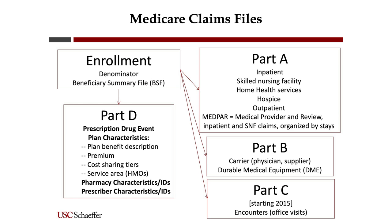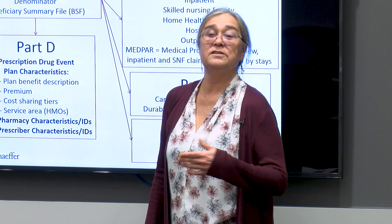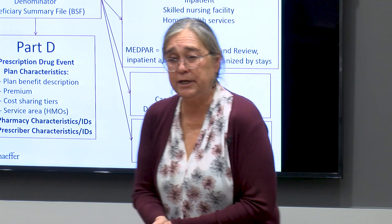I totally recommend using the birth date to calculate age every single time, because one file measures age at the end of the year and the other measures it at the beginning. If you combine them without accounting for that, you'll have a year where they don't age or they age two years. Always use the birth date, not the age variable.